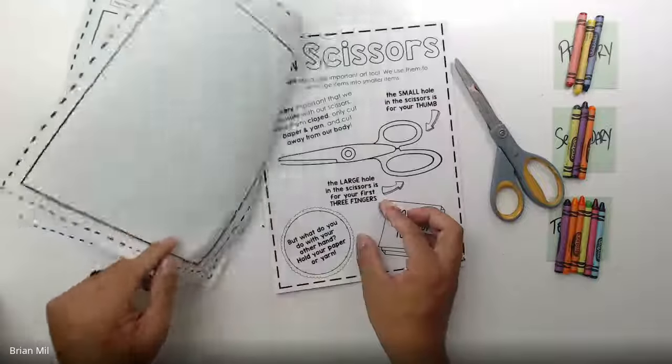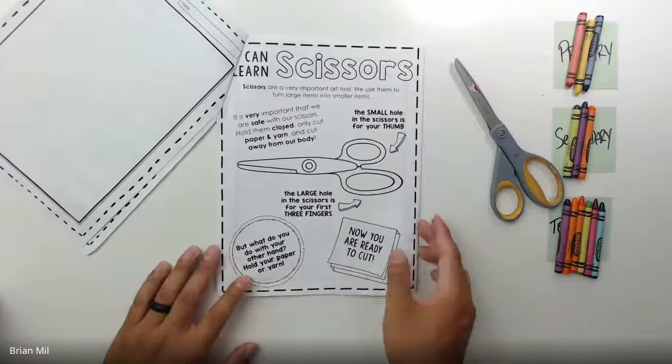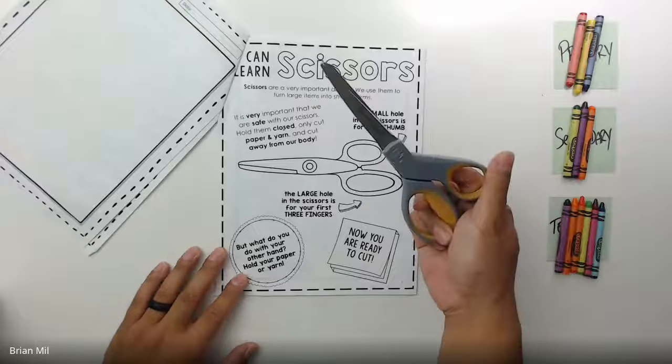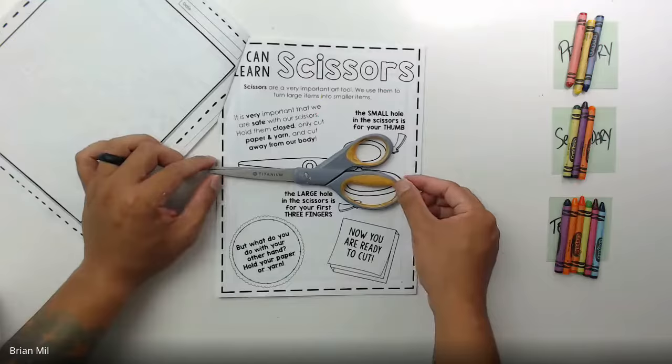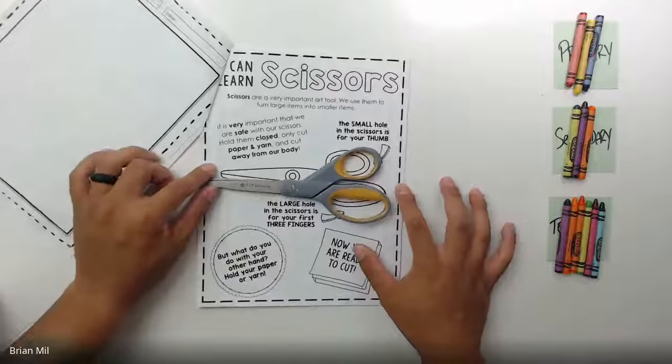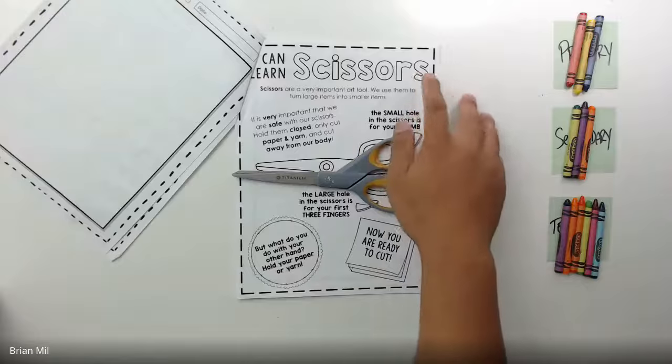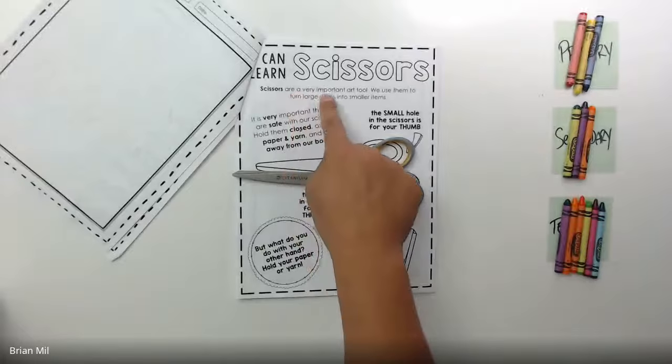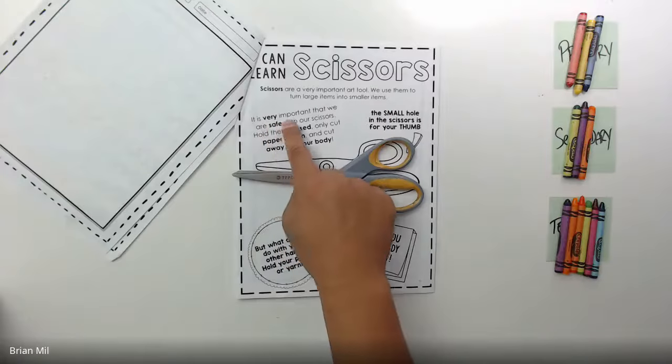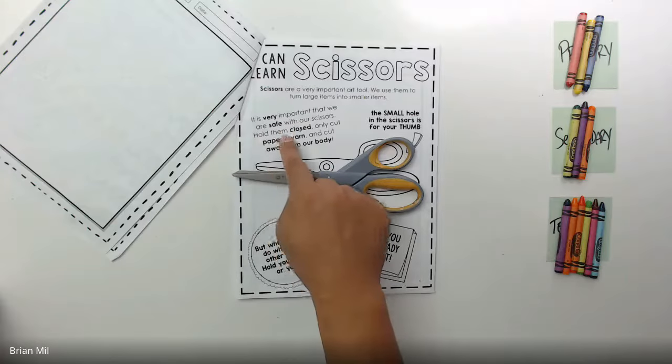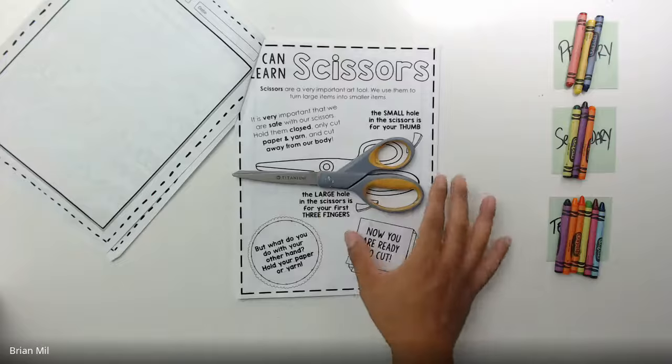Today we're going to flip the page to the next one. It should say scissors. What I like to do is place my scissors on top of the drawn scissors on the paper, making sure the small holes are on top and the big hole is on the bottom. It says: scissors are a very important art tool. We use them to turn large items into smaller items. It's very important that we are safe with our scissors, hold them closed, and only cut paper and yarn, cutting away from our body.